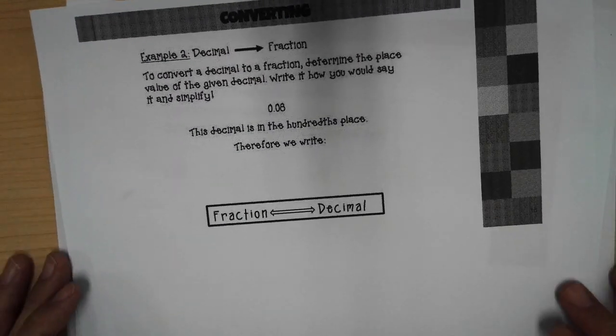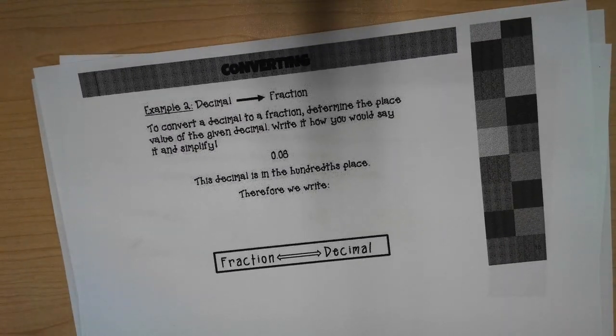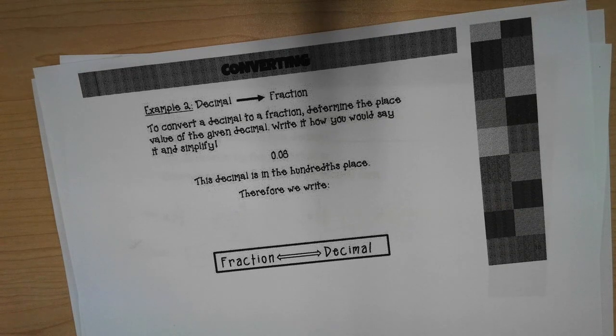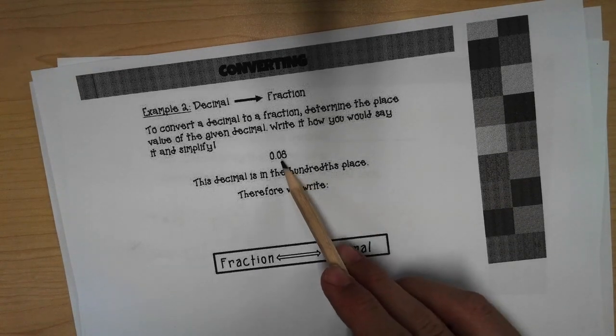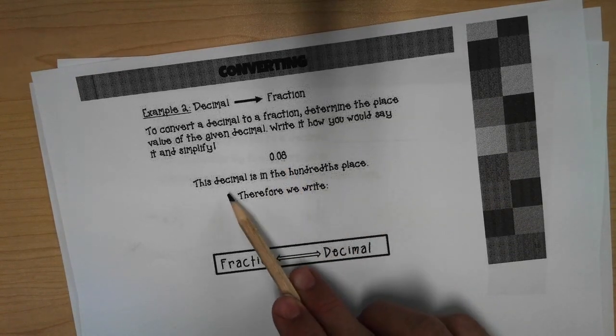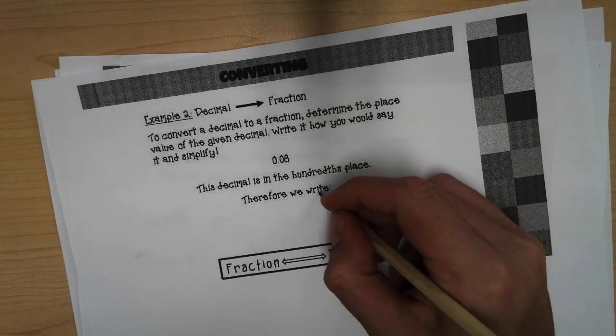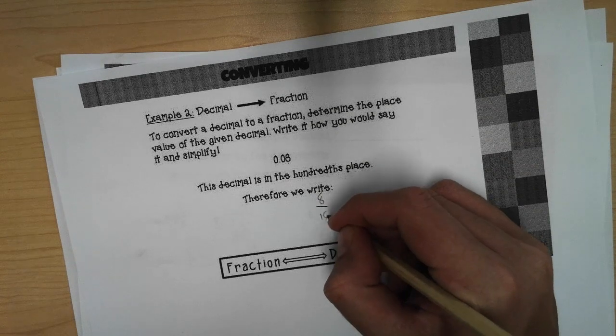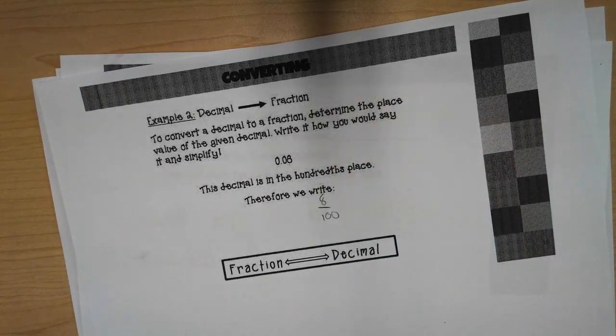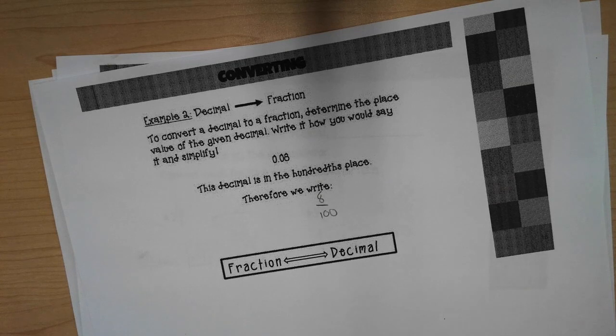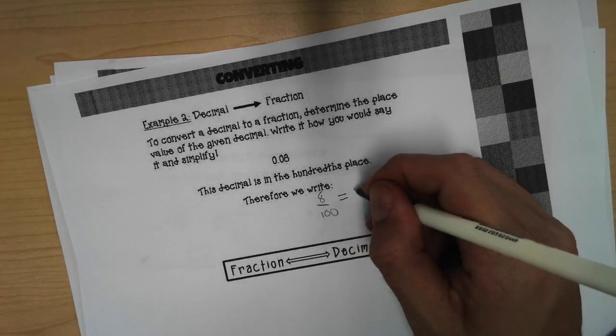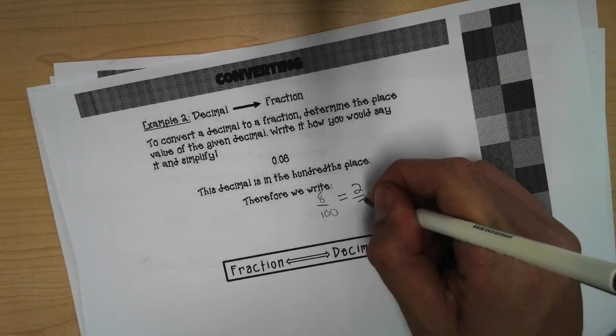Now let's take a decimal and convert it into a fraction. So we have eight hundredths. The decimal is in the hundredths place. Therefore, we can write eight out of a hundred. Eight out of a hundred is the equivalent to two out of twenty-five.